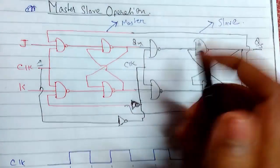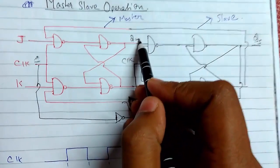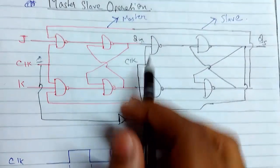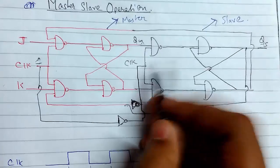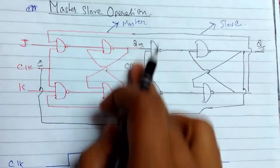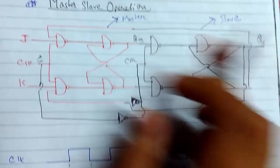So this part will not be active and whatever the Qm that gets stored will work for this part only. And when this changes to zero, this becomes one. So this part is active and this part does not get active. The previous value is stored.